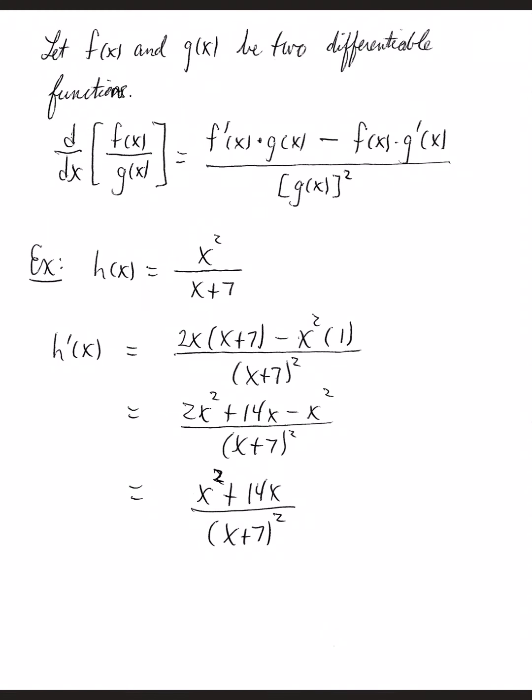Let's look at some examples. I'm going to define function h to be x squared over x plus 7. Following the quotient rule expansion, derivative of the top is 2x times the bottom left alone minus top left alone times the derivative of the bottom, which is 1, all over the denominator squared.